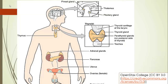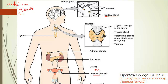The menstrual cycle is controlled by two endocrine glands and the two we're interested in are the pituitary gland over here and down here the ovaries. Now the ovaries contain the ova — that's the Latin for eggs — and it'll be the follicles which contain the ova that we'll be thinking about.